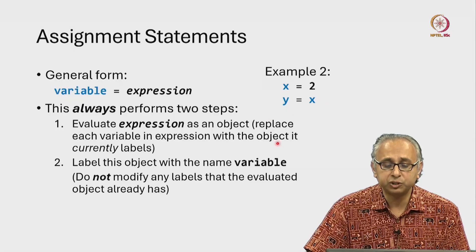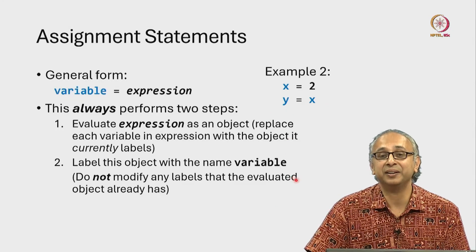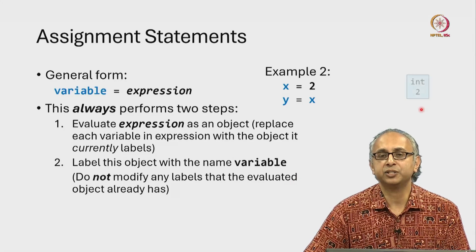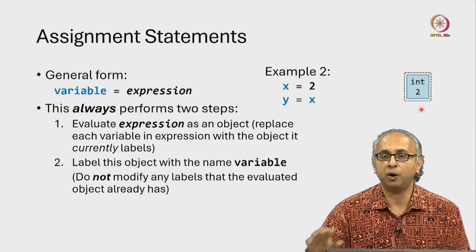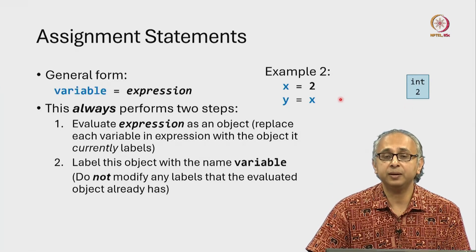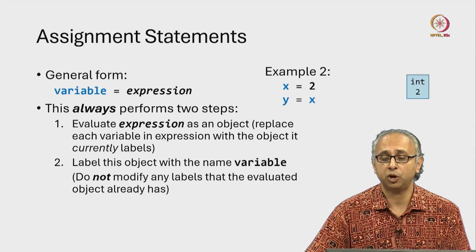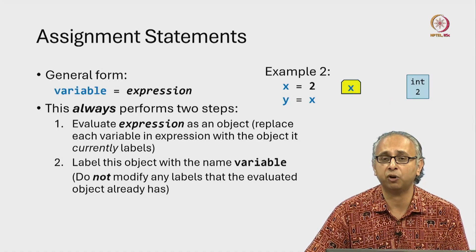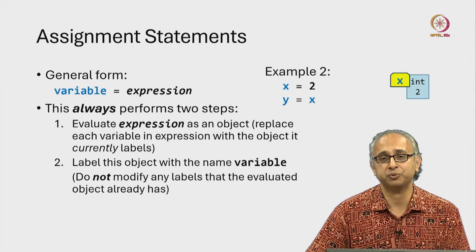This time we will carefully read the details that we had earlier hidden. Starting with x equals 2 — that's very simple. We evaluate the right hand side, which just produces the integer 2, and then we take the variable and tag it to this object. So that assignment statement just involves taking this label and attaching it to this object.